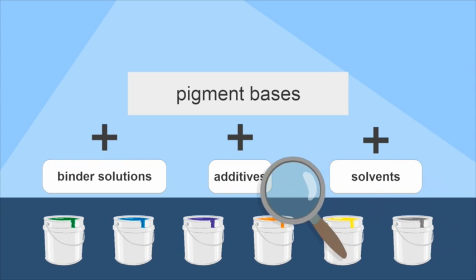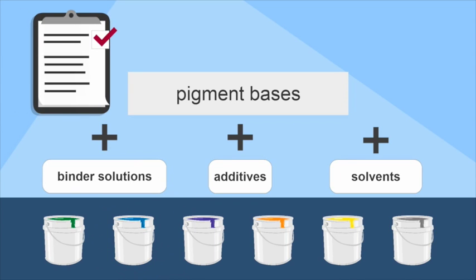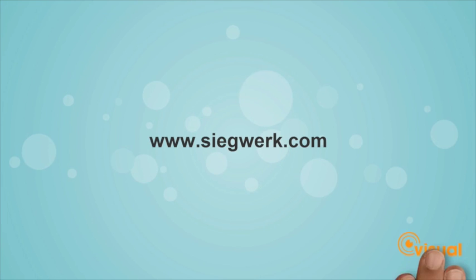The raw materials are, of course, carefully selected in advance to ensure product safety. Quality controls take place between every production step. That is how individual and high-quality printing inks are made.